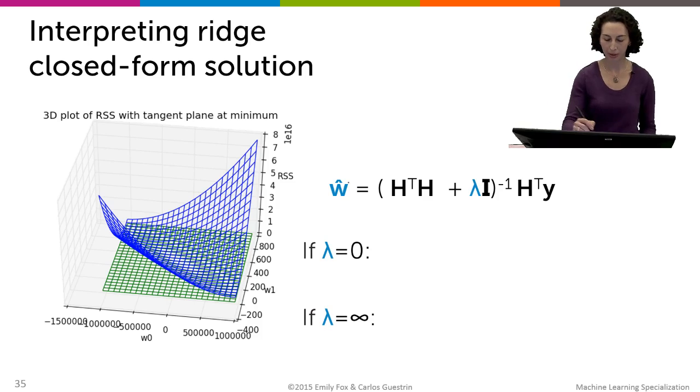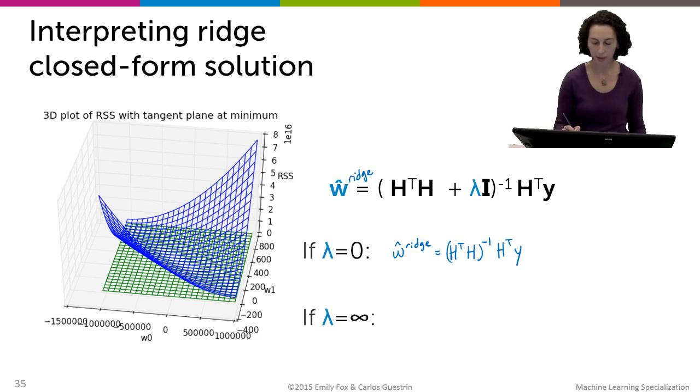Okay, so now let's think a little bit about this solution. So this is our w hat ridge. And what happens if I set lambda equal to zero? Well, I get w hat ridge is equal to h transpose h inverse h transpose y. And that might look very familiar to you. That was exactly equal to our w hat least squares, our old solution, before we introduce this notion of ridge regression.